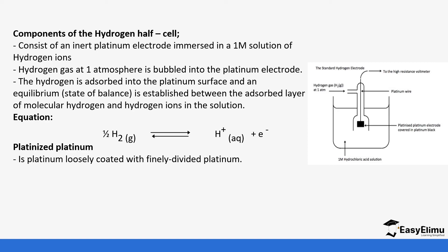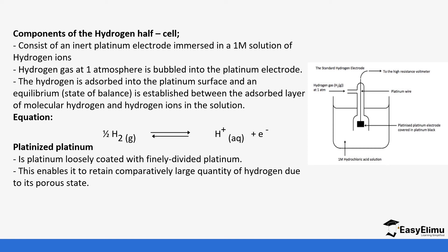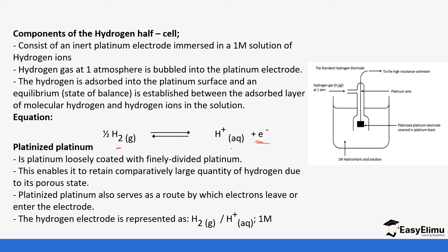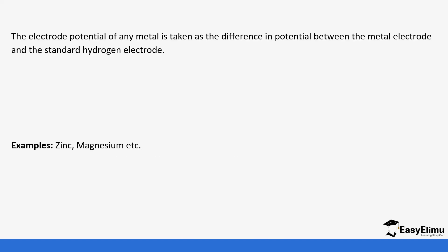Platinized platinum is platinum loosely coated with finely divided platinum. It enables it to retain large quantities of hydrogen due to its porous state, and also acts as a route through which electrons leave or enter the electrode. The electrode potential of any metal is taken as the difference in electrode potential between the metal electrode and the standard hydrogen electrode.